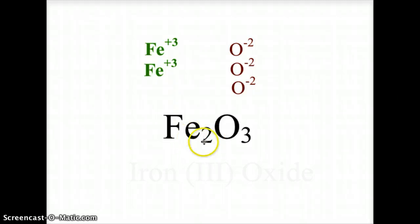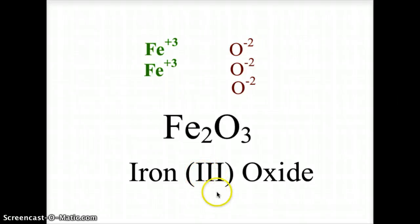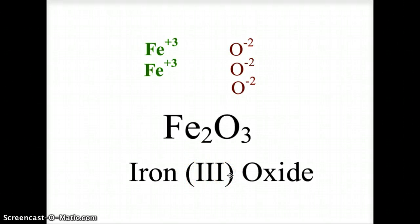Fe2O3 has two irons and three oxides. The name is iron(III) oxide, written with the Roman numeral III, because iron can be +2 or +3. To indicate that it is a +3 ion, we use the Roman numeral in the name.